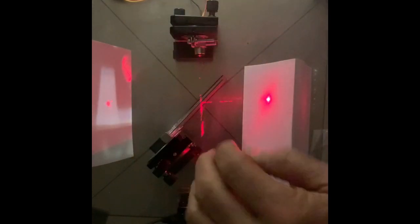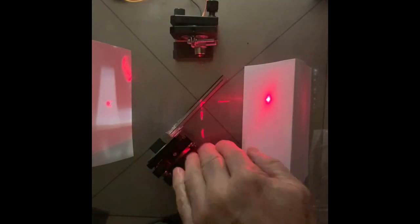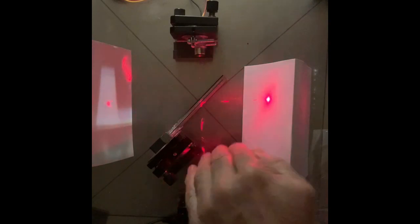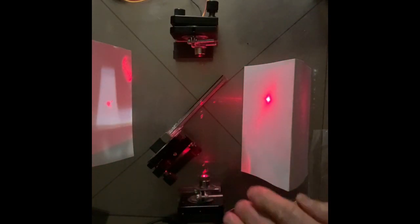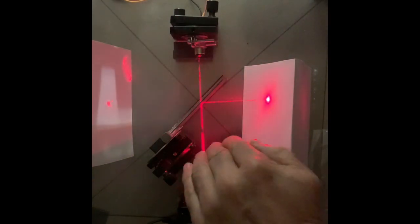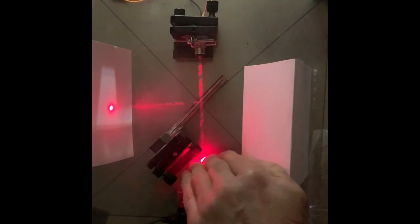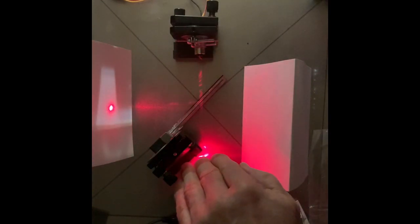This laser is still going to the beam splitter. The interference starts at the beam splitter, but two separate lasers. There you go. Do you have any idea what's going on? I mean, it's interference, but...